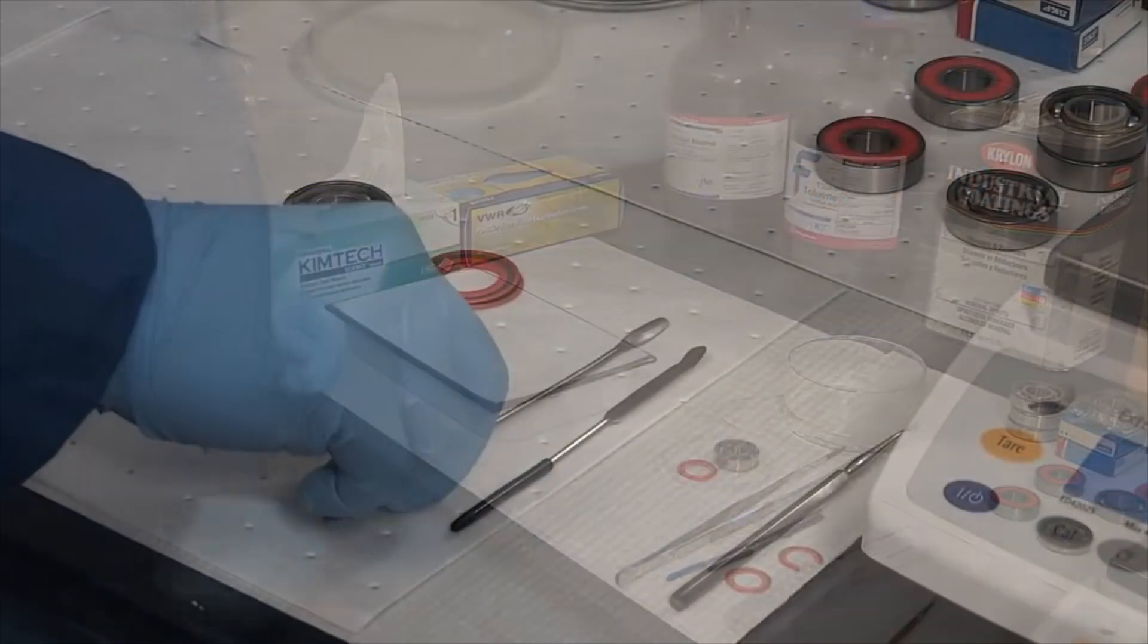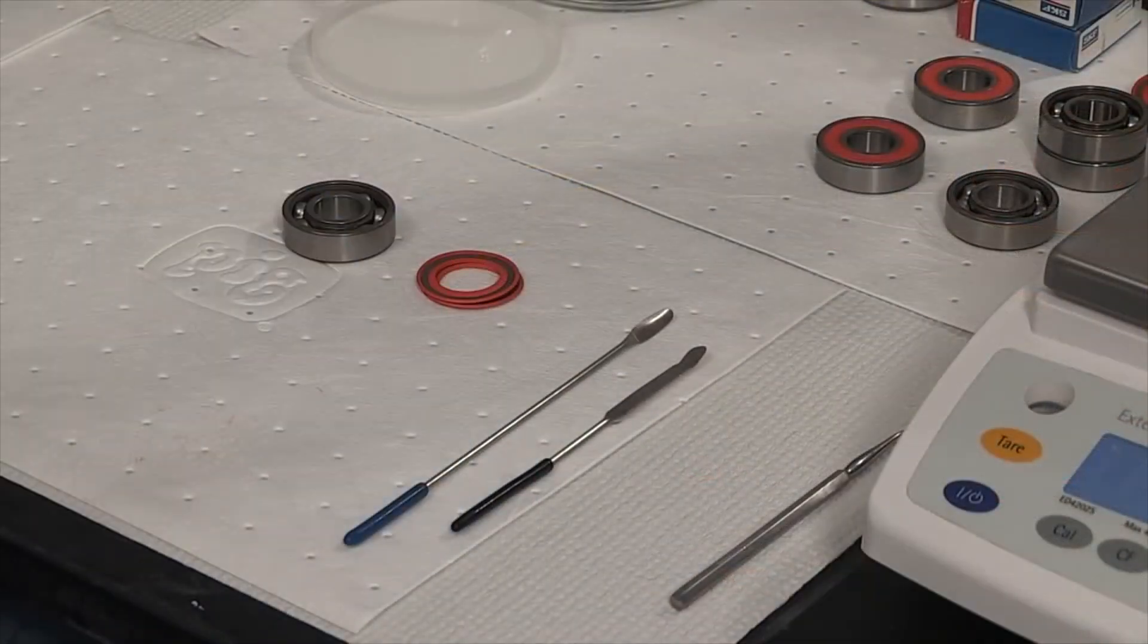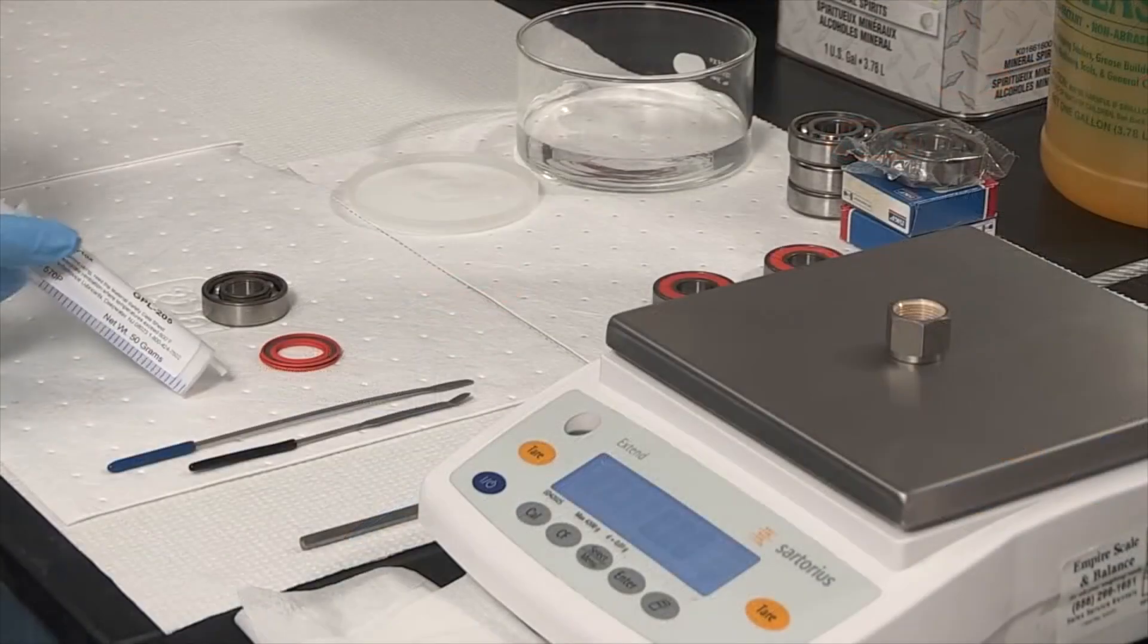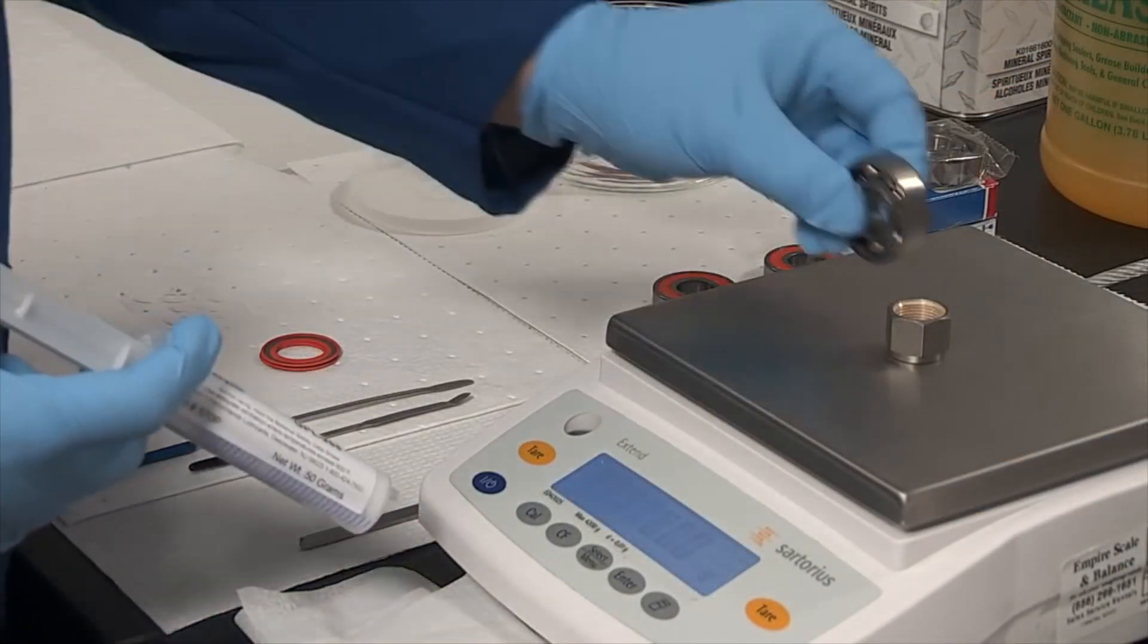When repacking, lubricate the bearing with the specified grease. For some applications, the rolling elements may be pre-lubricated with a few drops of Krytox oil of the same viscosity as the base oil in the grease.